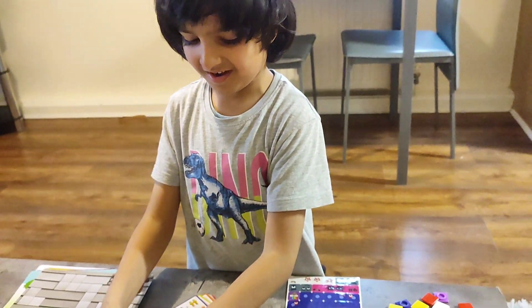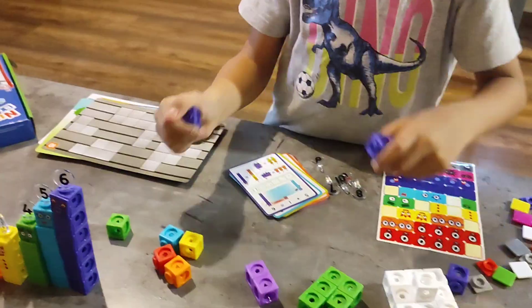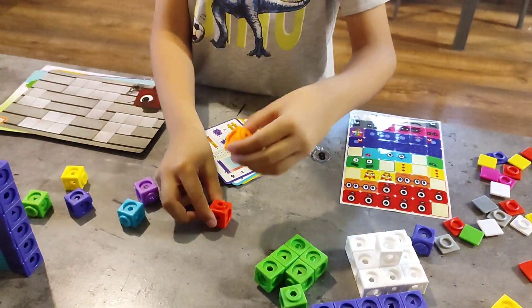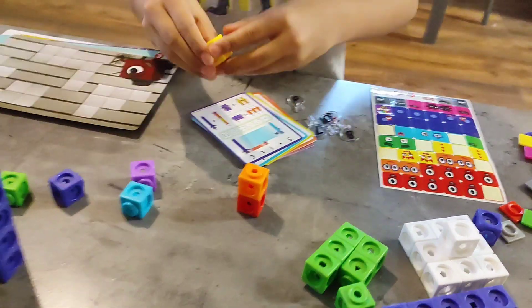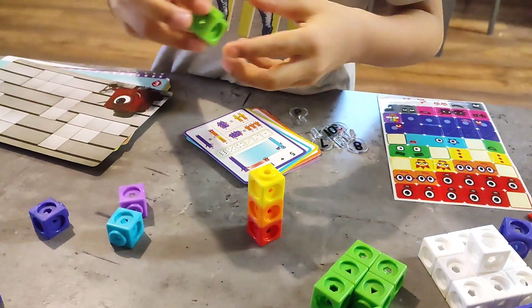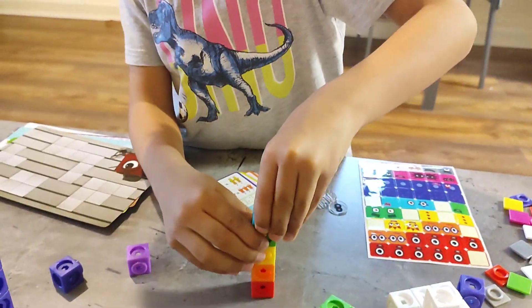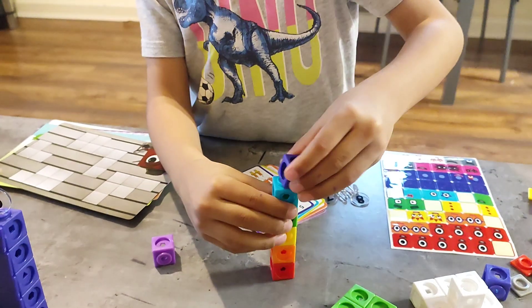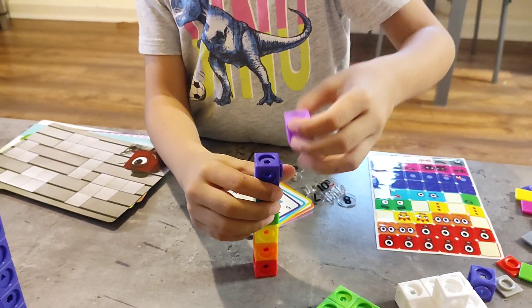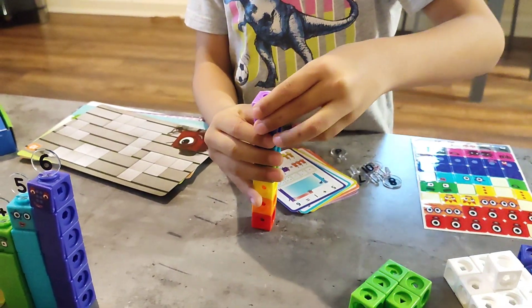These are the colours of the rainbow. Orange, yellow, green, blue, purple, violet, green, blue.